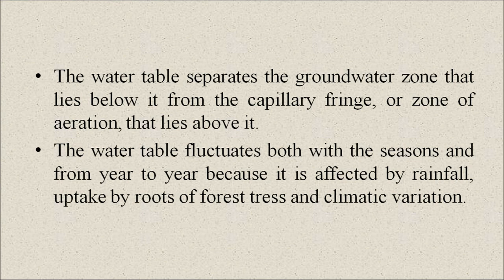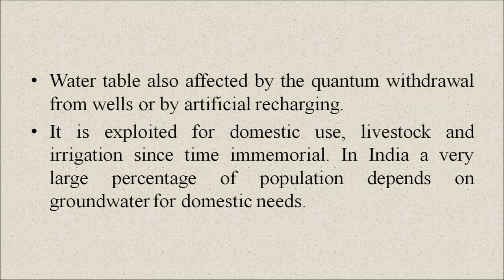The water table fluctuates both with the seasons and from year to year because it is affected by rainfall, uptake by roots of different forest trees, and climatic variations. The water table is also affected by the quantum of withdrawal from wells or by artificial recharging. It has been exploited for domestic use, livestock, and irrigation since time immemorial. In India, a very large percentage of the population depends on groundwater for domestic needs.